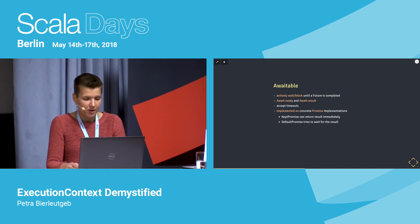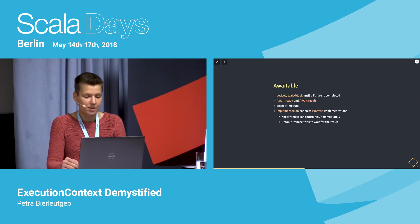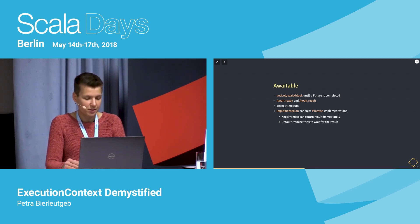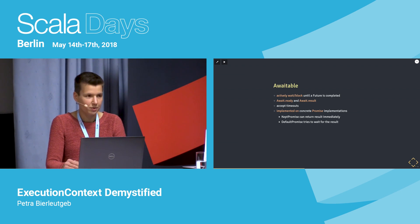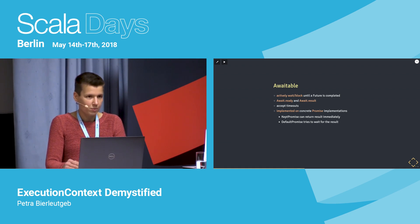Another interesting concept is Awaitables. Even though in most cases you should try to avoid blocking, sometimes you might need to actively block on your current thread until a Future is completed. In that case you can use the two methods Await.ready and Await.result. These methods also accept timeouts, since you probably don't want to wait forever. The implementation is on the concrete Promise implementations — a KeptPromise can return the result immediately since it's already fulfilled, while DefaultPromise tries to wait for the result.